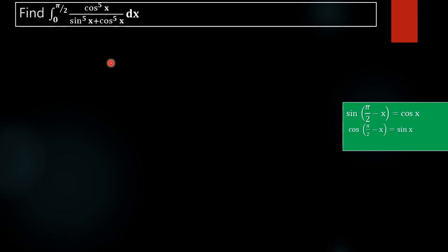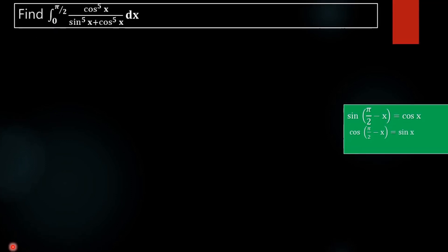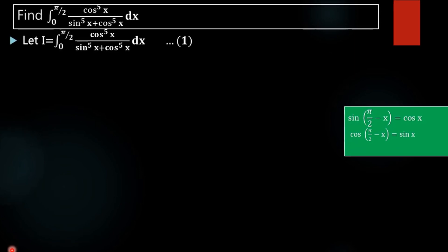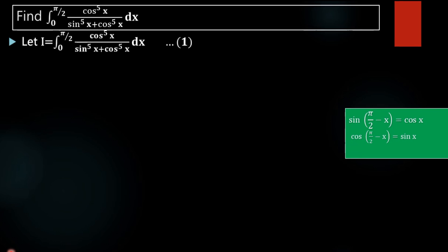This is a definite integral. We are going to solve this integral by using the properties of definite integral. We are taking this function as i, equal to the integral from 0 to π/2 of cos⁵x divided by (sin⁵x plus cos⁵x) dx.